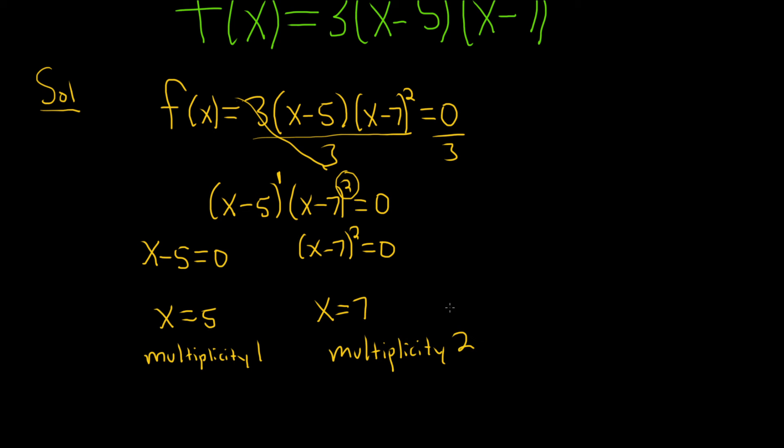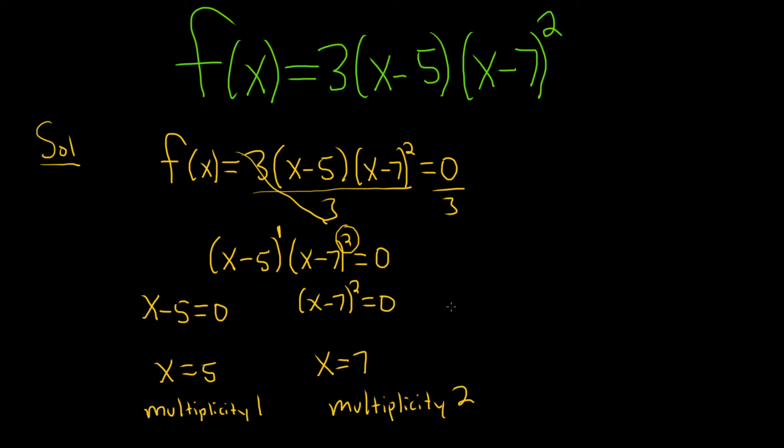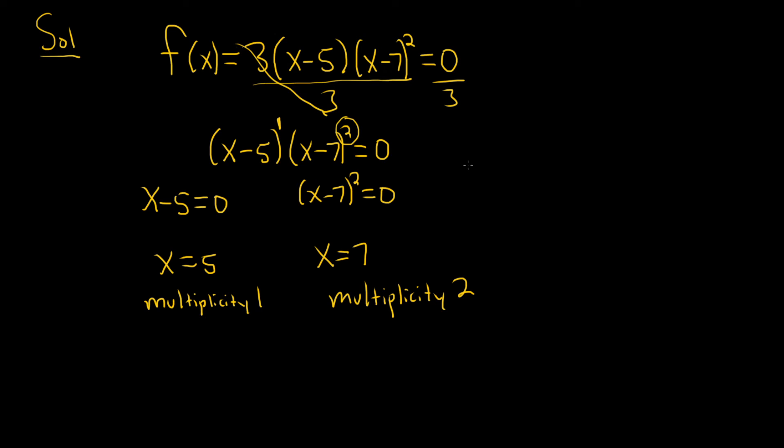You can pretty much look at it and say the multiplicity is one, the multiplicity is two. It's really simple if you know how to do it. And because this is an odd number, it's going to cross the x-axis here at x equals five. And because this is an even number, it's going to touch and turn around at x equals seven. So these are the answers.